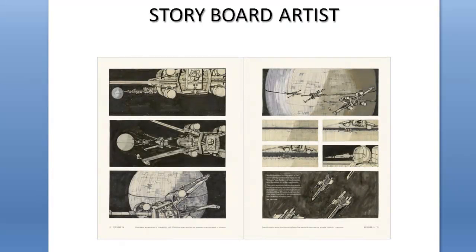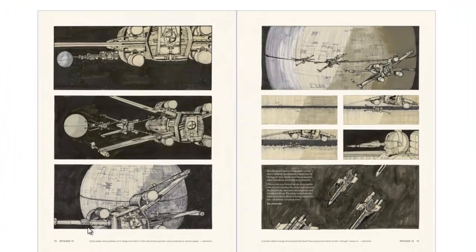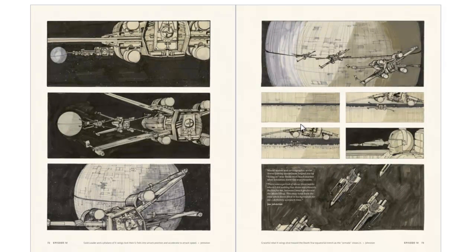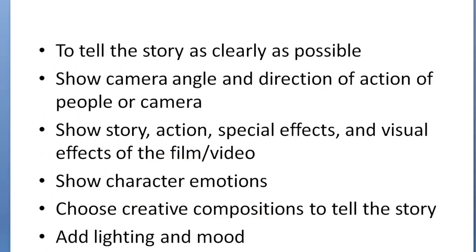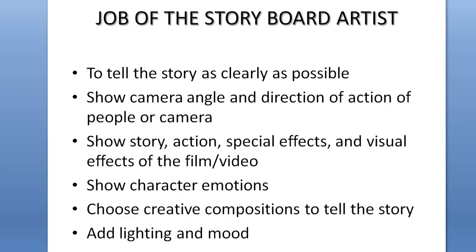Welcome to the basics of storyboarding, part one. Here we're looking at a storyboard from the original Star Wars trilogy — this is actually the very first one. You can clearly see how each panel in the story is very clear and directional in terms of how the ships are flying in, and it gives you key information on what's going on in the story. Basically, the job of the storyboard artist is to tell a story as clearly as possible.